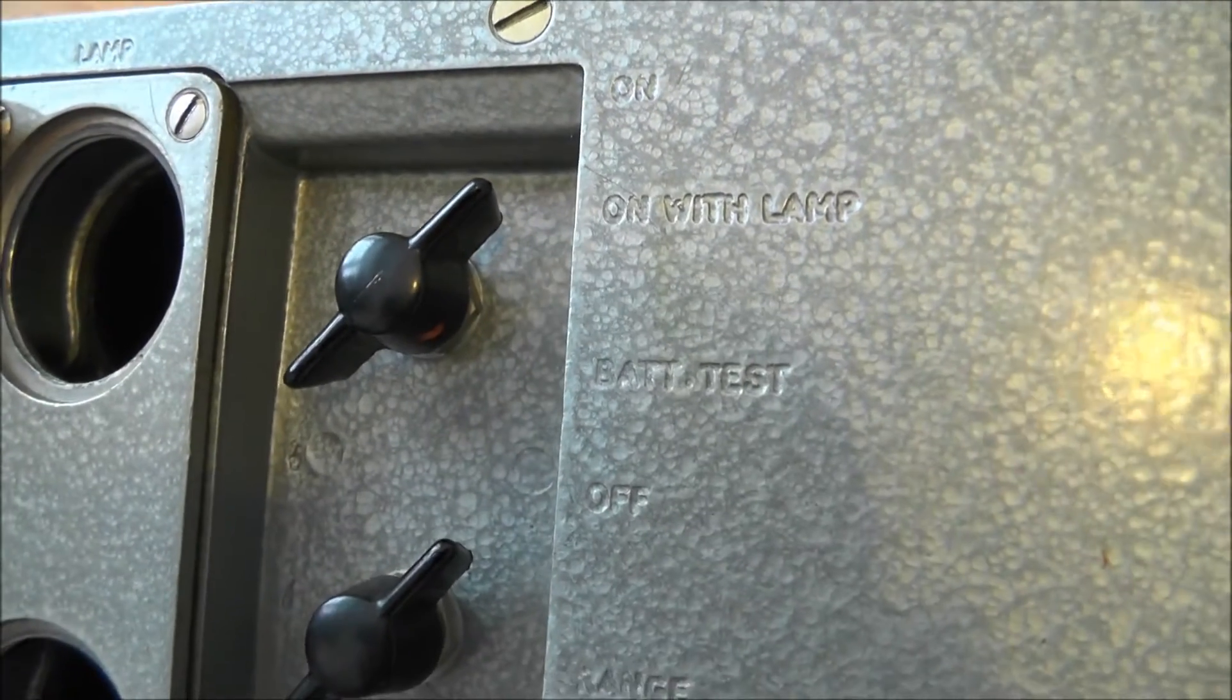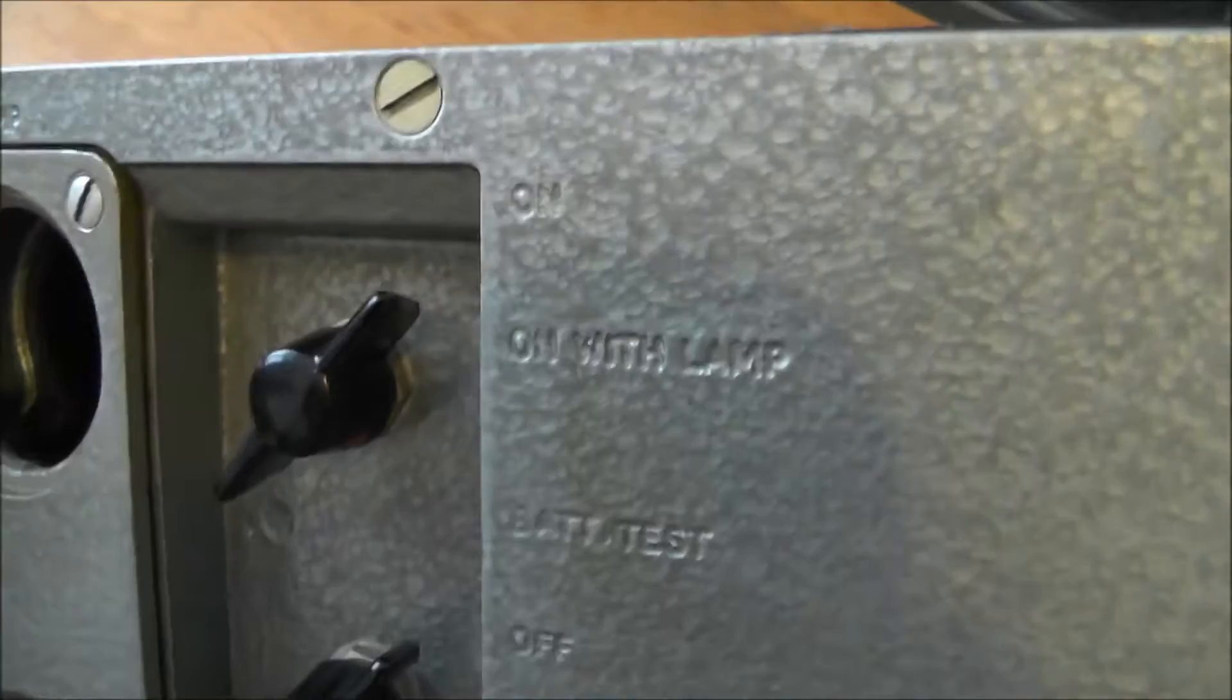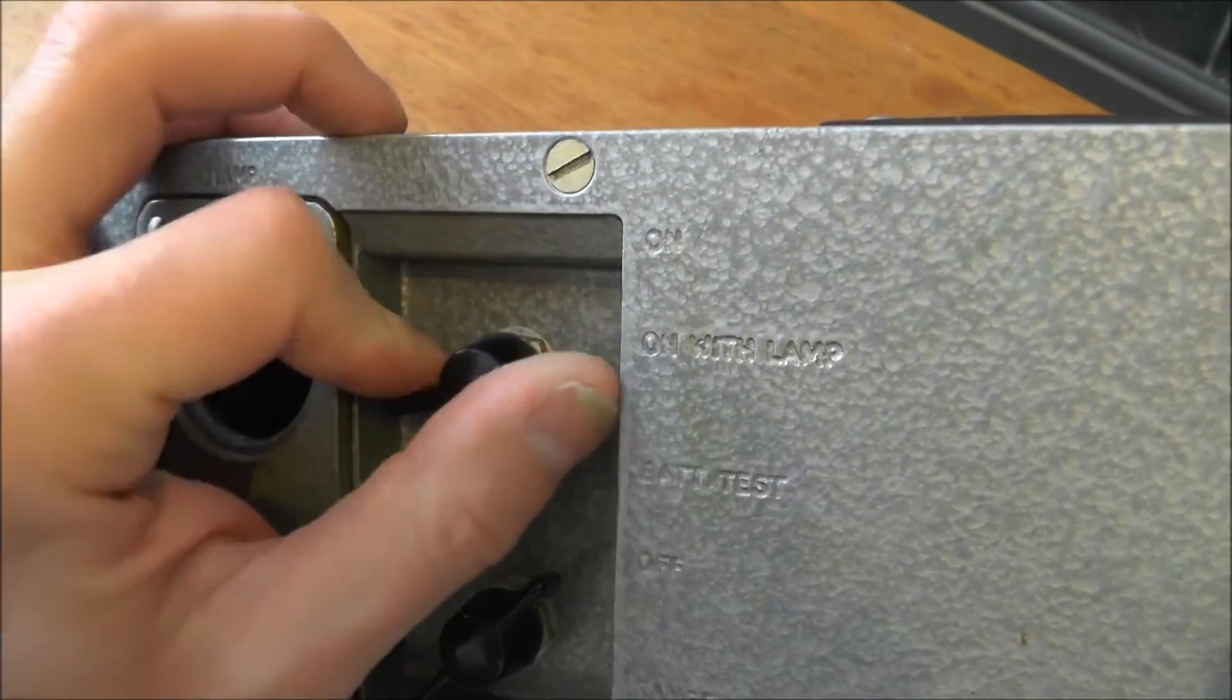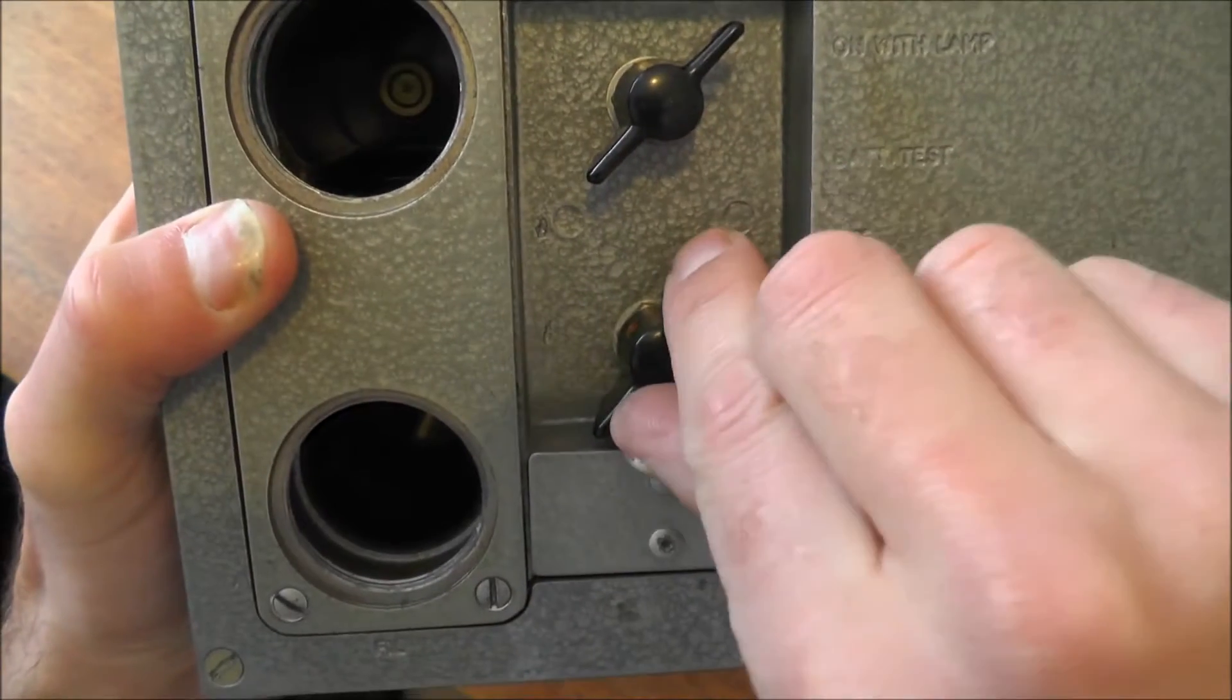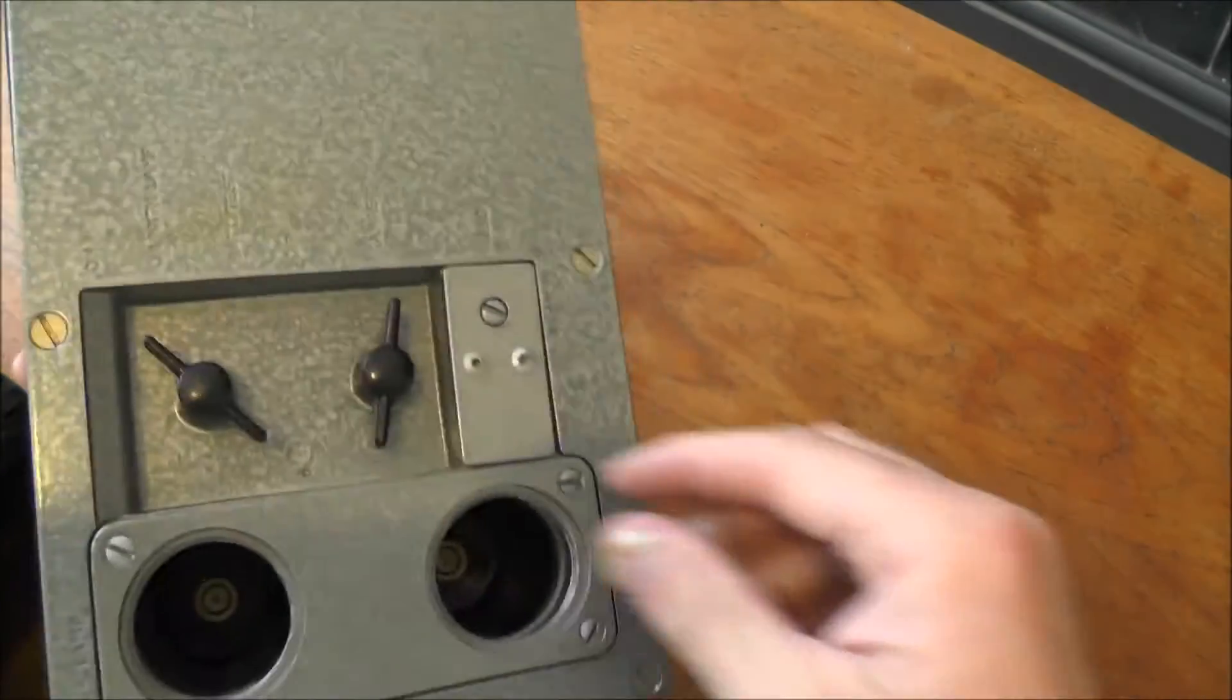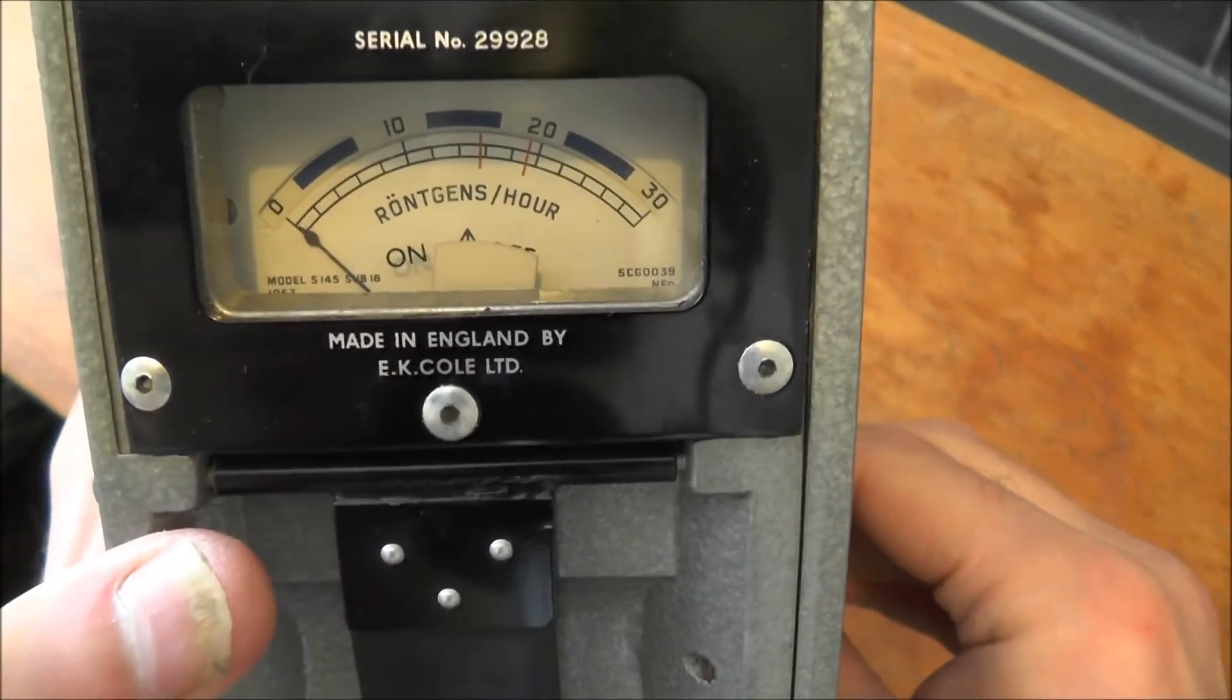Let's see if we can get this on camera. So you've got on, on with lamp and battery test. Nice big clunking switches. And the range select.